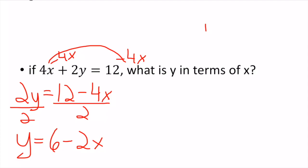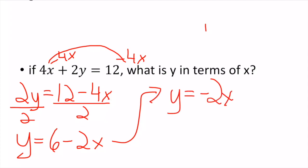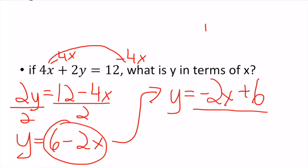Now 6 - 2x is not usually the form we're used to seeing for lines. If this were a multiple choice answer, your answer might appear rearranged. All we're doing is switching these things around and putting it into y = mx + b form, which would be y = -2x + 6.